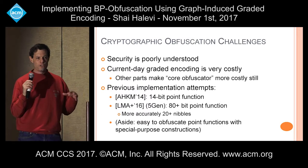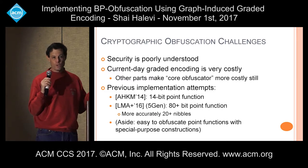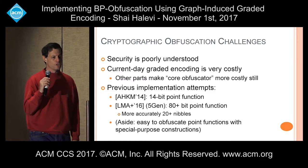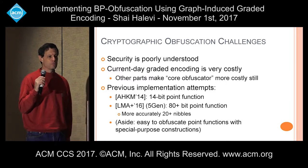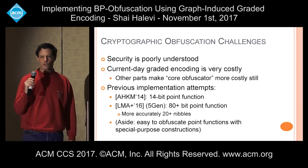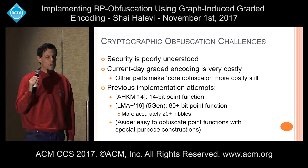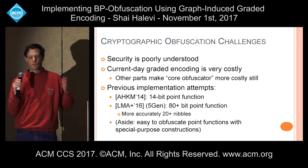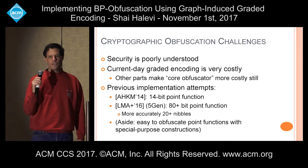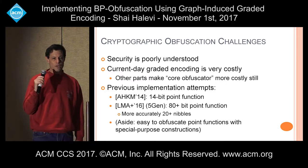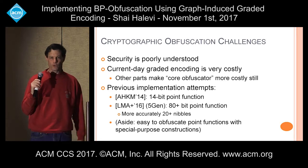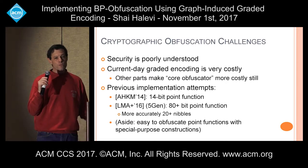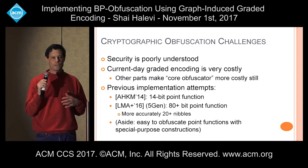To overcome that, you use randomization — I'll get back to what kind later. The challenges in general-purpose cryptographic software obfuscation: first, security is poorly understood, mainly because the security of the graded encoding schemes we use is poorly understood. The other problem is it's extremely expensive. There's a multilinearity degree parameter and things grow very quickly with it — you cannot get beyond 100, and in the context I'm talking about you cannot even get beyond 20. There are also other parts of the core obfuscator that make it even more expensive.